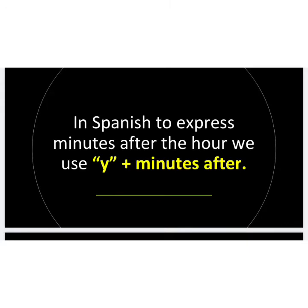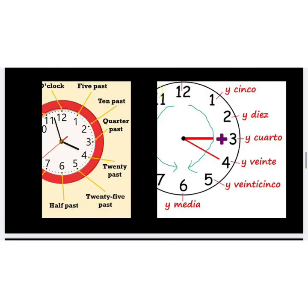To express minutes after the hour in Spanish, we use E followed by the number of minutes after the hour. Let us compare both clocks — the one in English and one in Spanish. Notice: 5 past is y cinco, 10 past is y diez, quarter past or 15 minutes after is y cuarto, 20 minutes past is y veinte, 25 minutes after is y veinticinco, and half past would be y media.